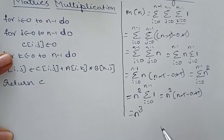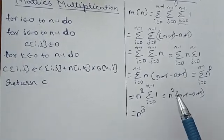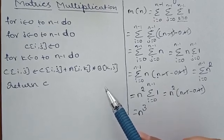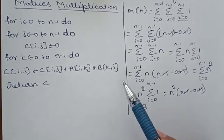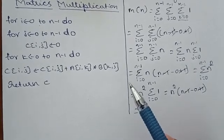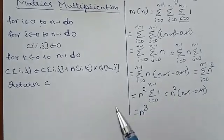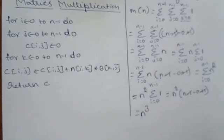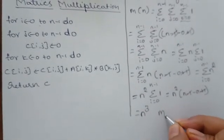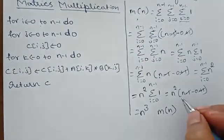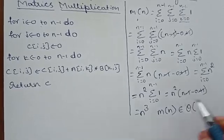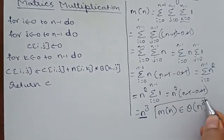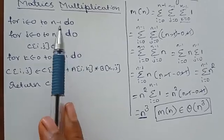To write the asymptotic notation, we must identify which case this algorithm falls under — best, worst, or average. Here, to perform matrix multiplication, we must traverse all rows and columns of both matrices. This falls under the average case, which uses theta notation. Therefore, m(n) ∈ Θ(n³). This is the mathematical analysis for matrix multiplication.